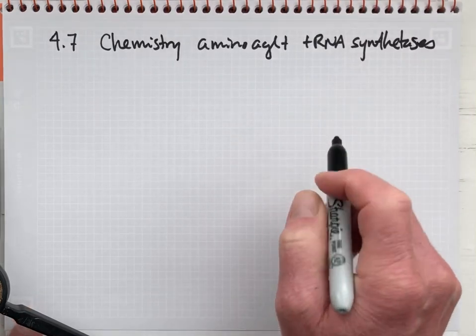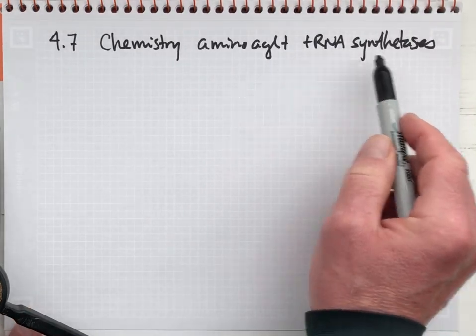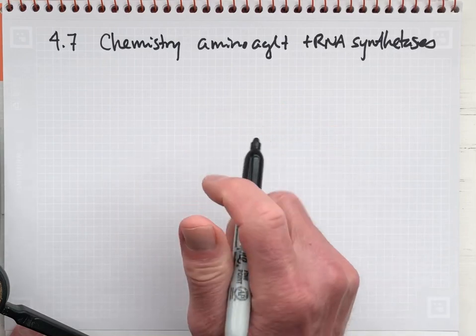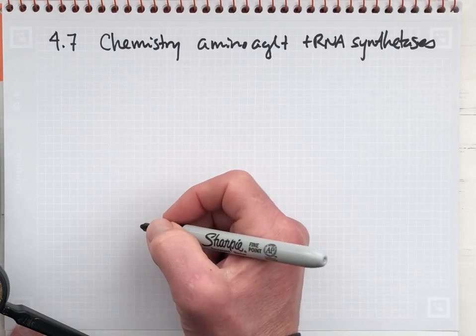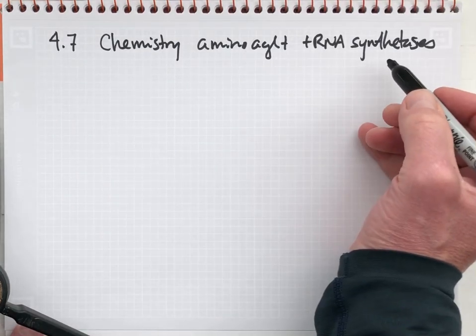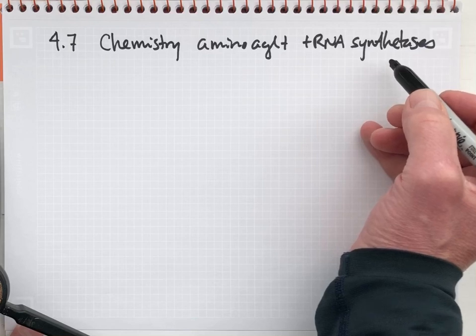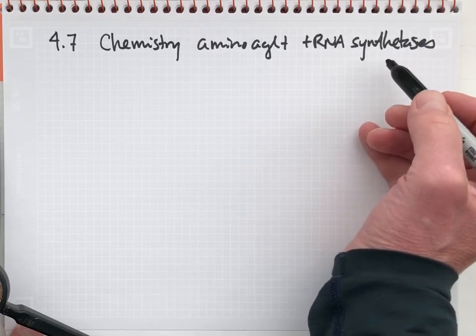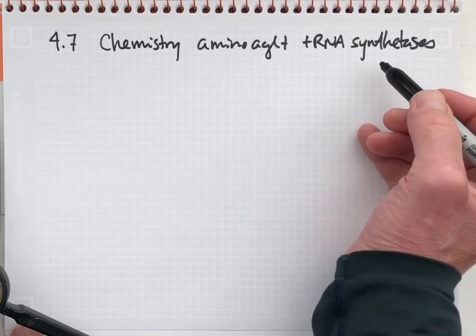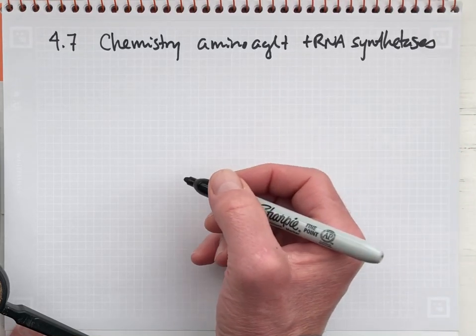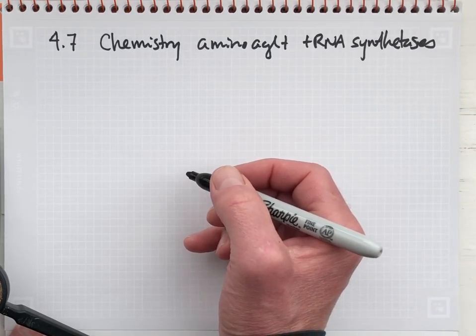The synthetases are a collection, a family of enzymes that all catalyze this set of reactions. They are the keepers of the genetic code, meaning each individual member in this family can identify the correct amino acid based on its R group.